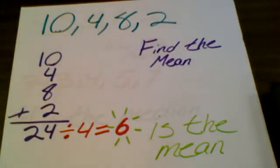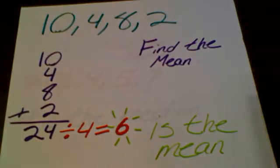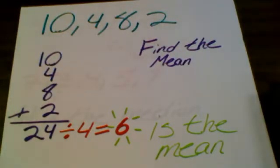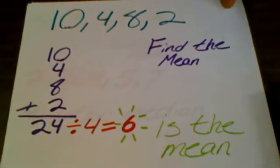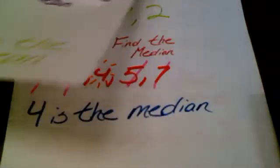Let's do a practice problem. We're going to find the mean for this problem. We're going to add 10, 4, 8, and 2, and that equals 24. Since we have four numbers that we just added, we divide 24 by 4 and that equals 6. That is the mean, which is just like finding the average.